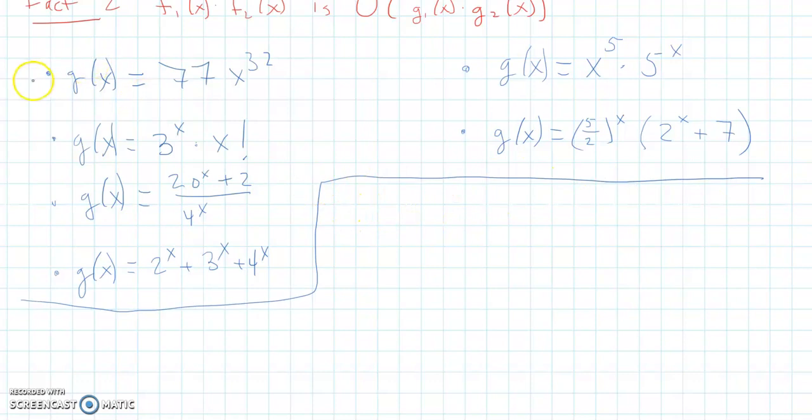Let me label these. This is a, b, c, d, e, and f. So doing a, well, 77x to the 32nd, that is a polynomial function.